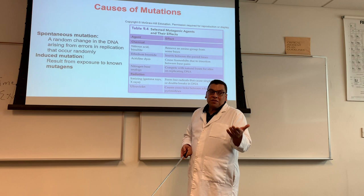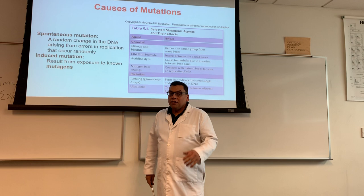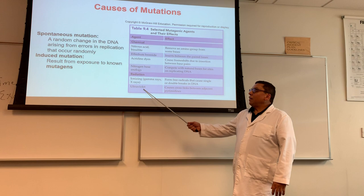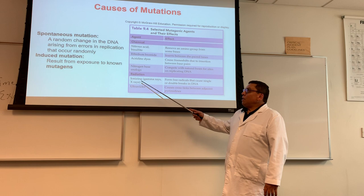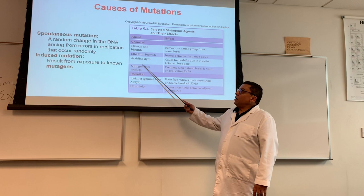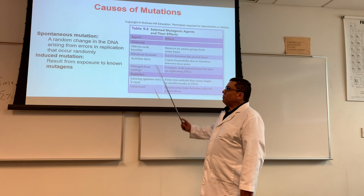Can we induce mutations in the lab? Yes, we can — you did it. When you put the plate under UV, that's what you were doing — you were inducing a mutation at the DNA level. You can do it using ultraviolet light like we did in the lab. You can also do it with more powerful forms of radiation, like X-rays and gamma rays, which are powerful enough to typically kill the organism. You can also do it with chemicals called mutagens.